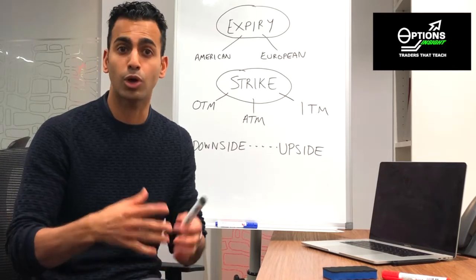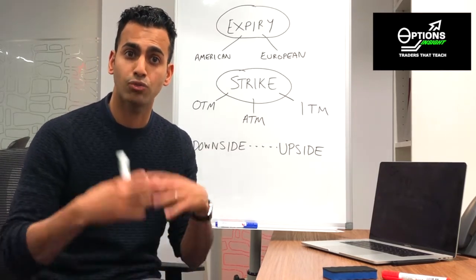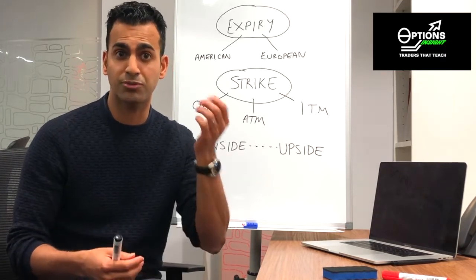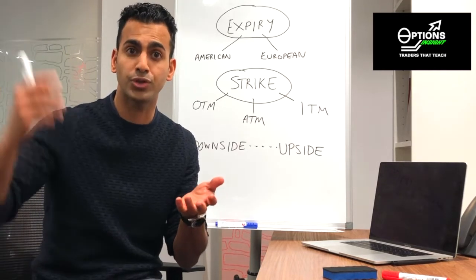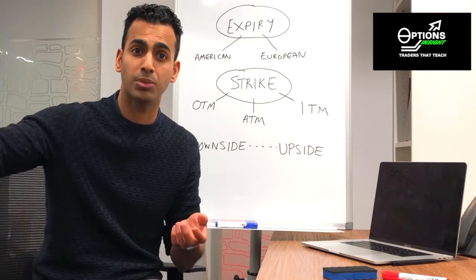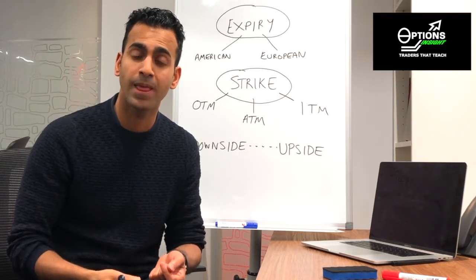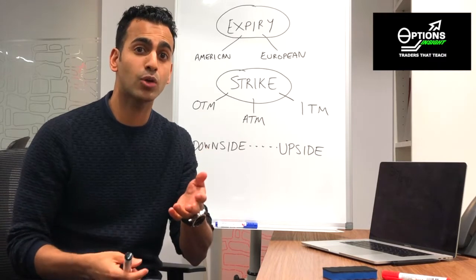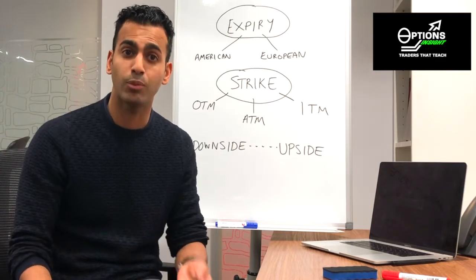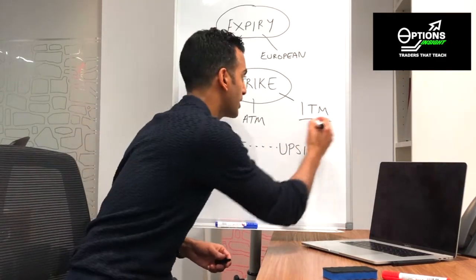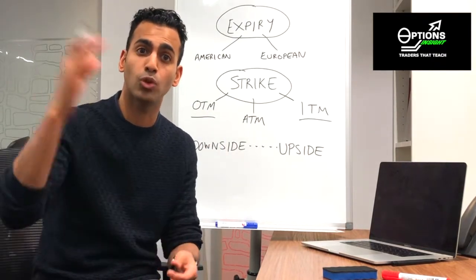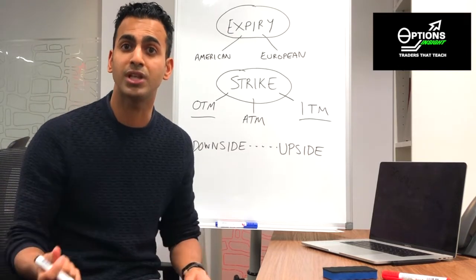For example, an out of the money call option — which is the right to buy — if you've got the right to buy Apple stock and the stock is at $400, but you have the right to buy it at $500, you're never going to do that. So an upside call option is an out of the money option because you would not exercise it. However, if the strike of that call option was $300 and the stock is trading at $400, you would exercise that, which means it's an in the money option. In the money versus out of the money depends on whether it's the right to buy or sell, and where the underlying asset is relative to the strike.